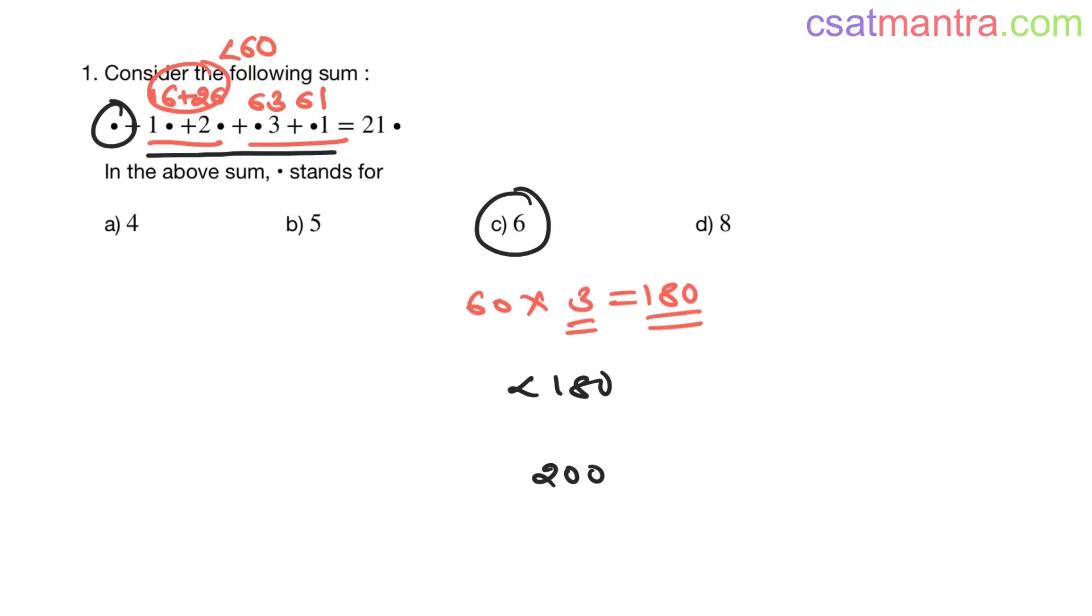If 6 is not the missing digit, it cannot be 5 and 4 because 5 and 4 are less than 6. Now we have left with only one option, that is this. So 8 is your answer my friends.